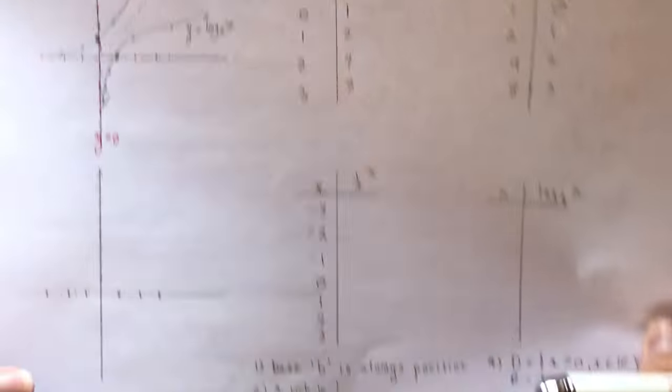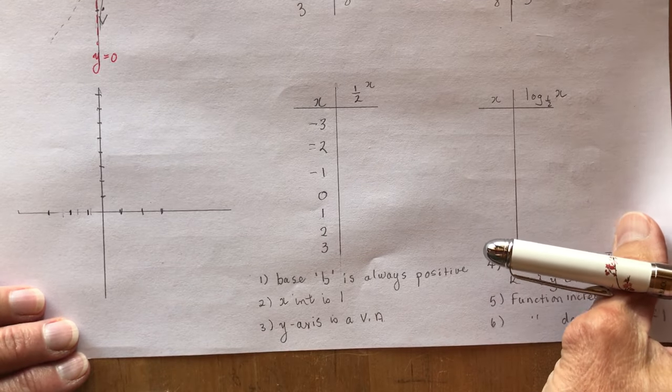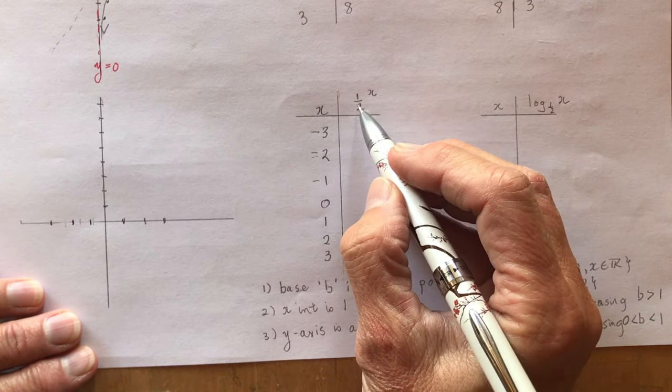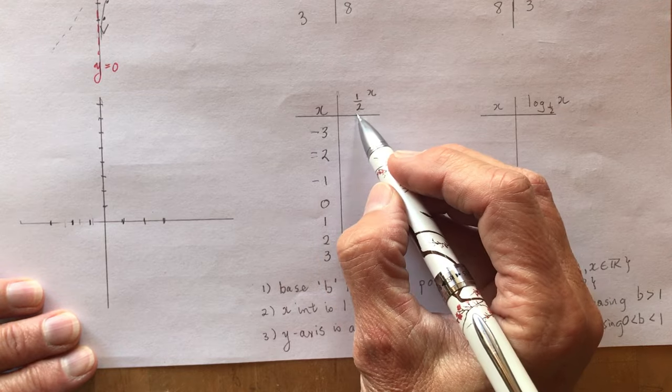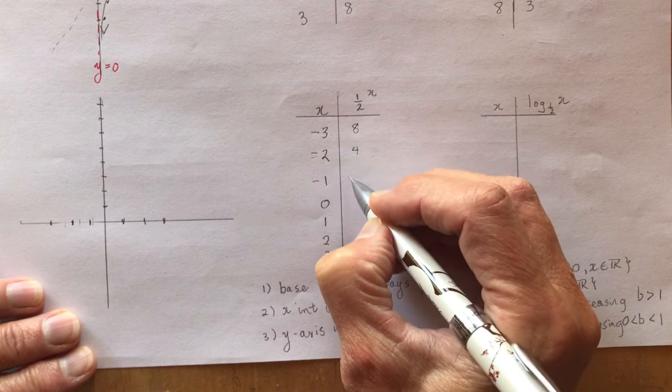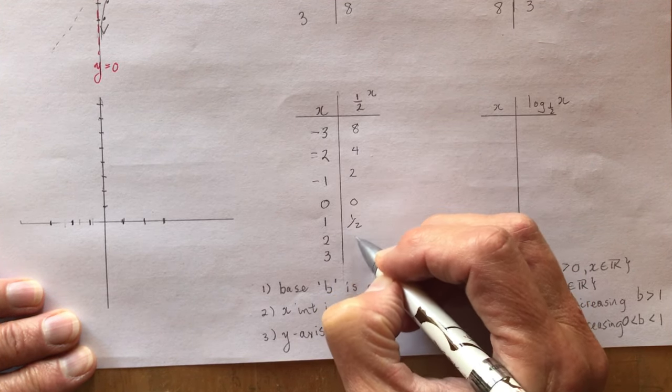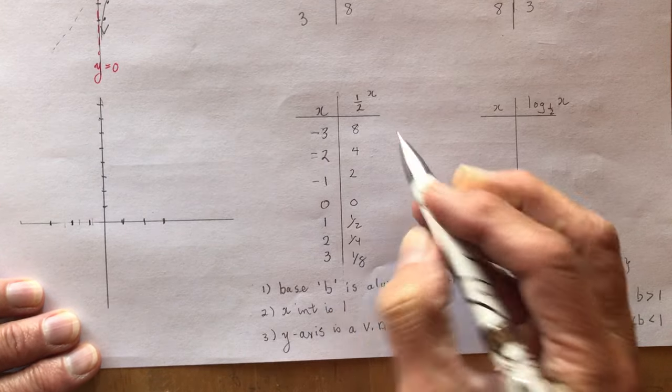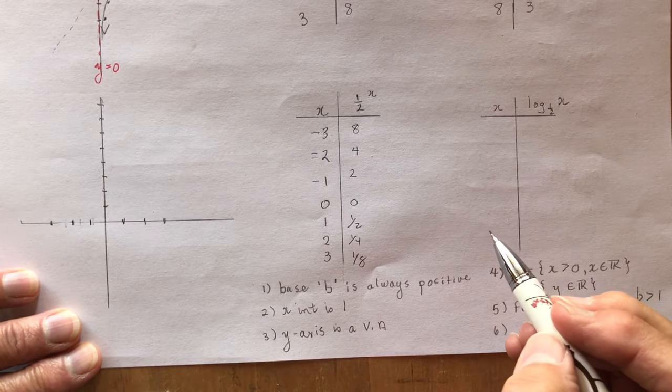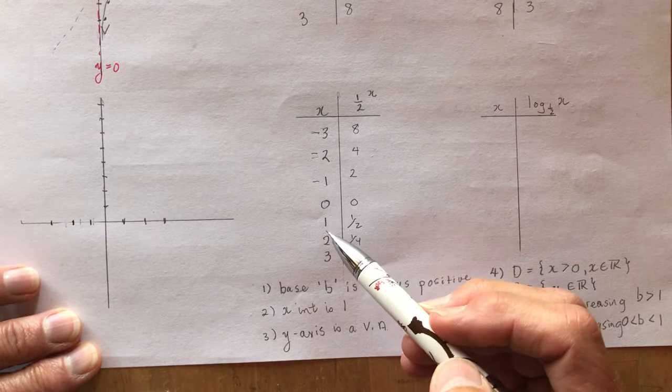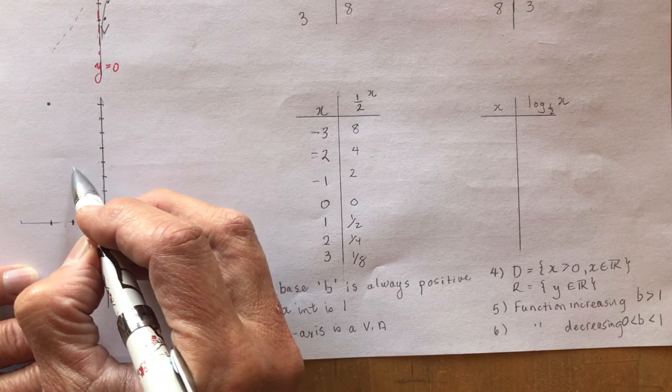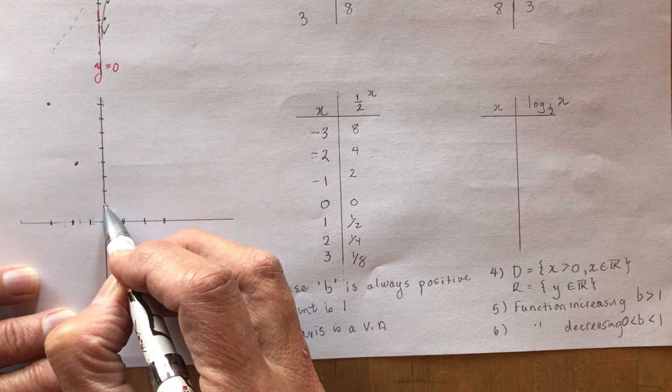It's also important that you see what happens when the base is between 0 and 1. In this case I'm going to do 1/2 to the power of x. So 1/2 to the -3 is 1/2 cubed and 1 over it, which is 8, then 4, 2, 1, 1/2, 1/4, and 1/8. That's my exponential function. 2 to the power of x would be considered a growth function and anything between 0 and 1 would be considered a decay function, because it is decreasing for all values of x.